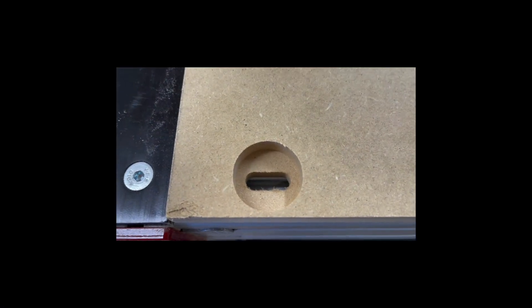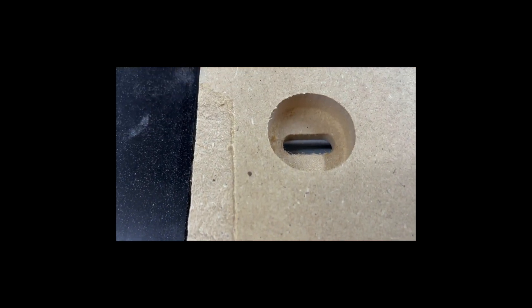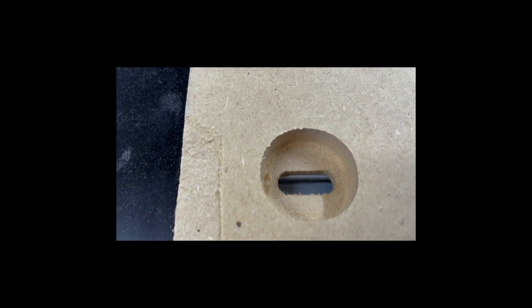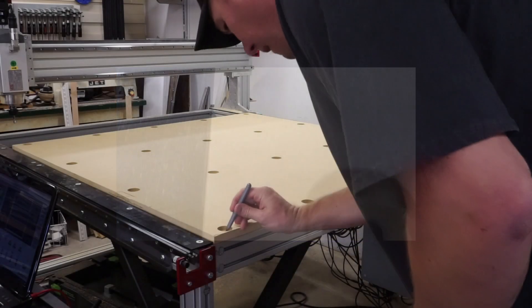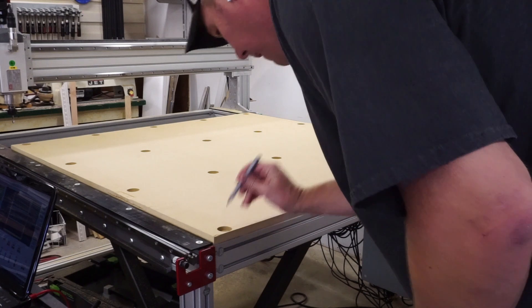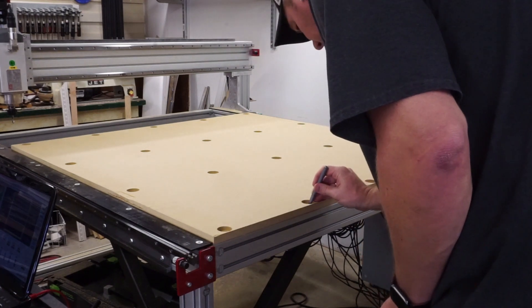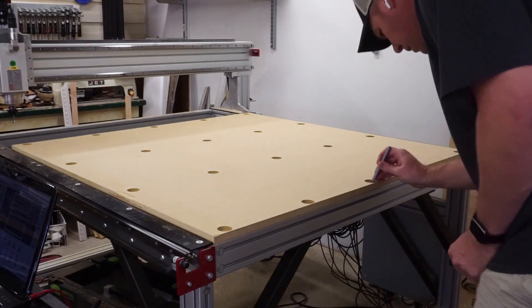Here you can see the mounting slots for the screws lined up with the slots in the CNC cross members where the T-nuts will be placed. Now with that step complete I went and marked where each mounting slot was on the cross members using a sharpie.